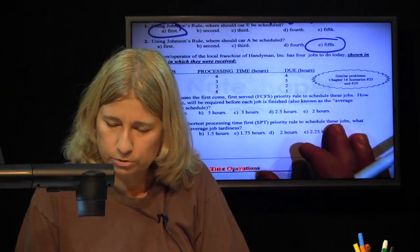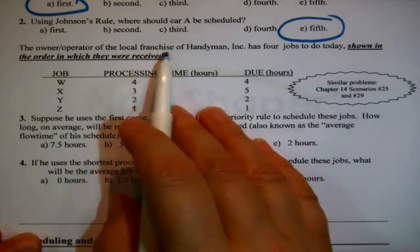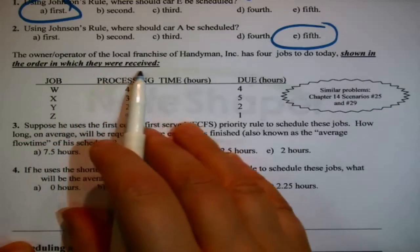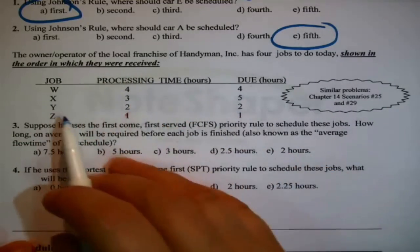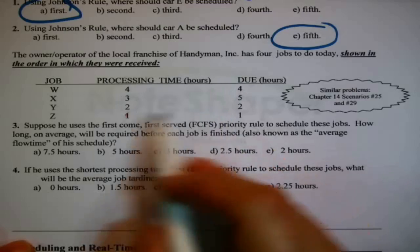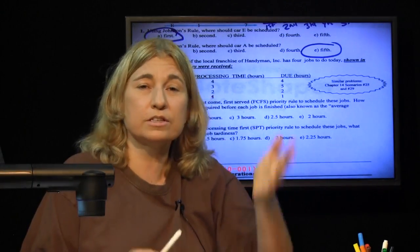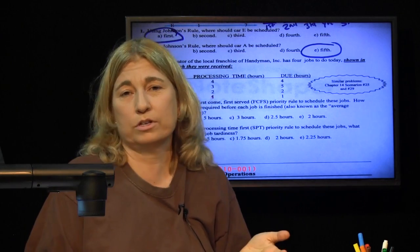Next, it's another scenario. The owner-operator of the local franchise of Handyman Inc. has four jobs to do today, shown in the order they were received, bold and underlined. And then there's some data, jobs, how long, and when they were promised, and then there's questions. This is a single stage or a single work center problem.